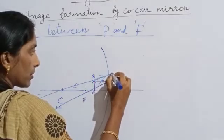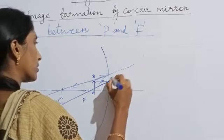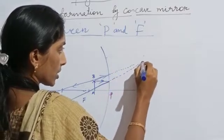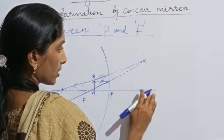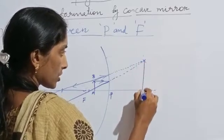So we have to extend this backward in order to get the point where these two rays will intersect. At this point it will intersect, so there we will get the image of this object.